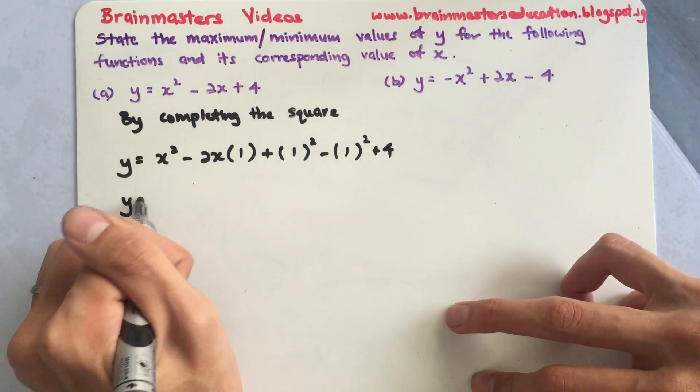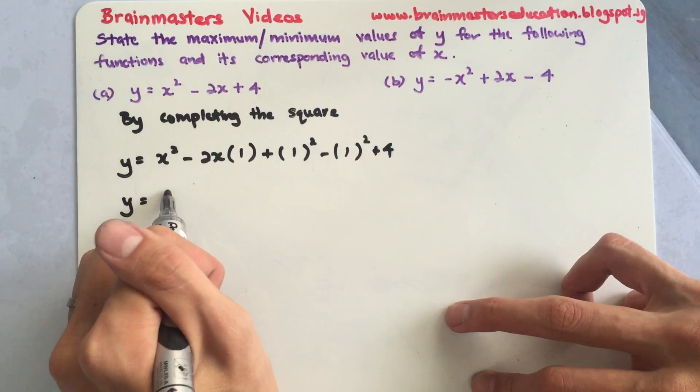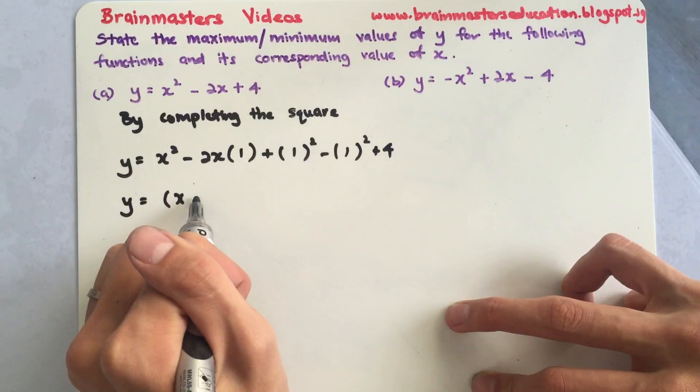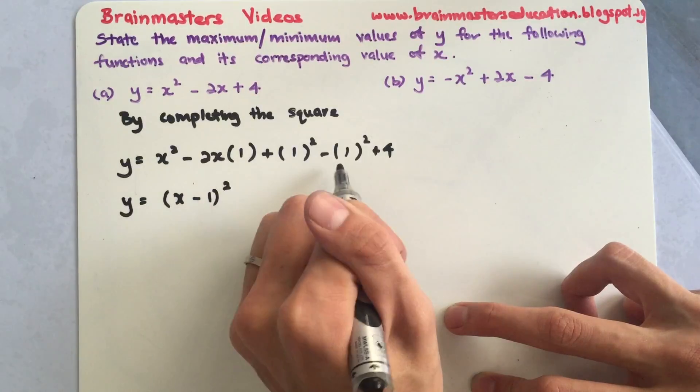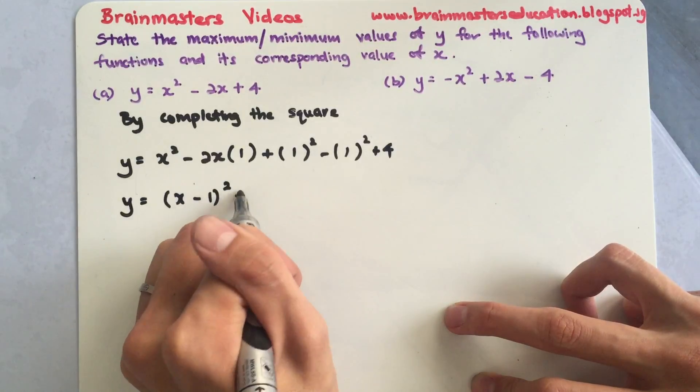By working this out, the first 3 will give me x minus 1 whole squared, simplifying the last part will give me positive 3.